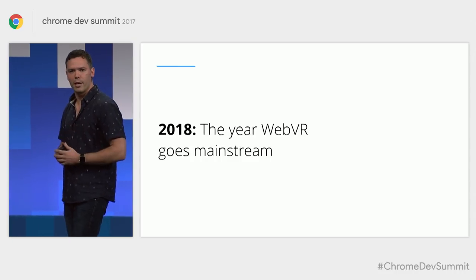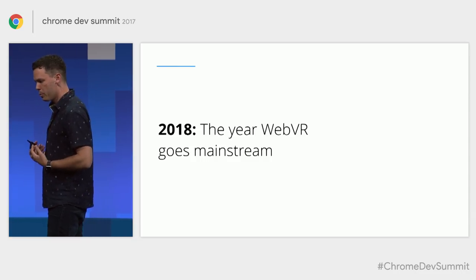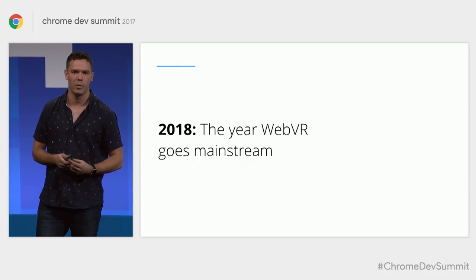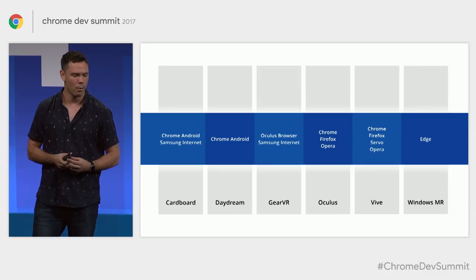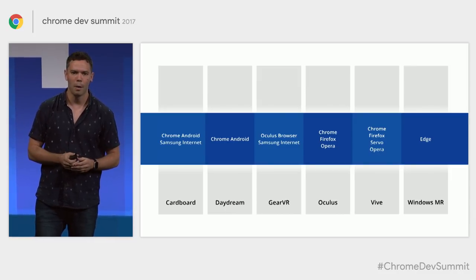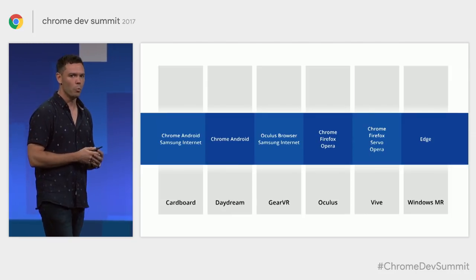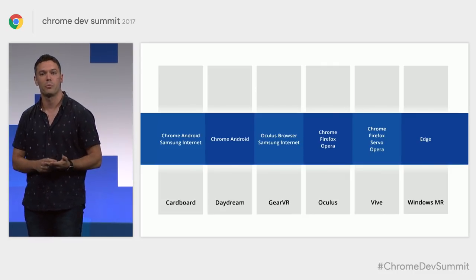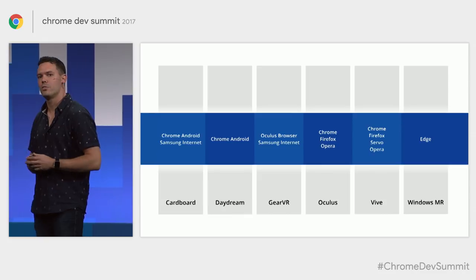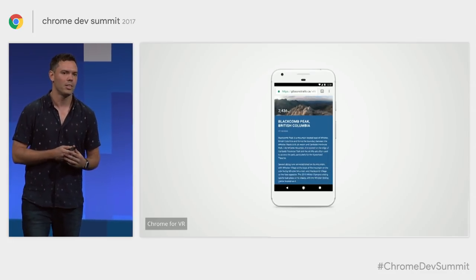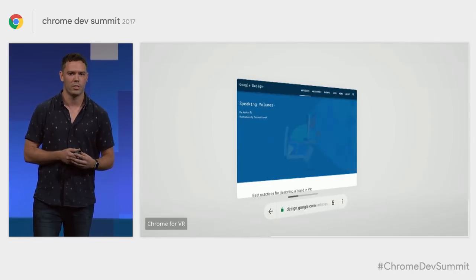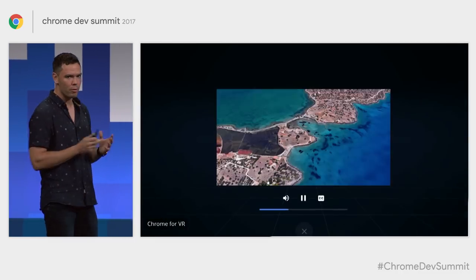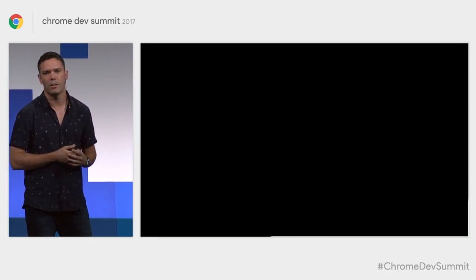We now stand on the cusp of 2018, and the message I want to hammer home is this: it's been three and a half years of gestation, but this is the year that WebVR goes mainstream. Virtual reality is a pretty fragmented landscape, but the one constant across all of it will be WebVR, running from Cardboard to Daydream to Gear VR, Oculus, Vive, and Windows Mixed Reality — on multiple browsers, including a new generation of browsers designed to be used inside virtual reality, so you can put on a headset and view any website ever made, including new 360 experiences.